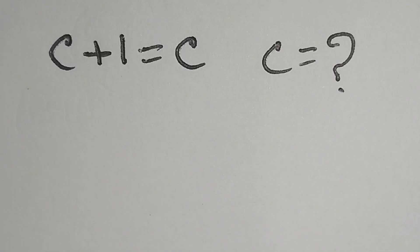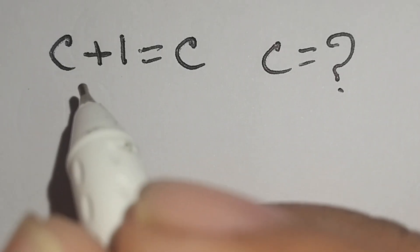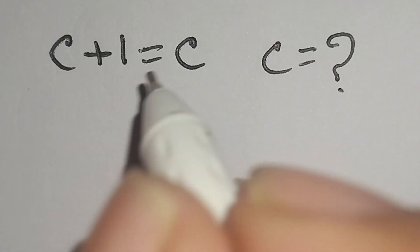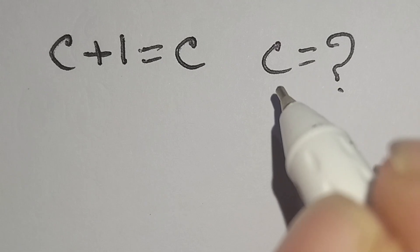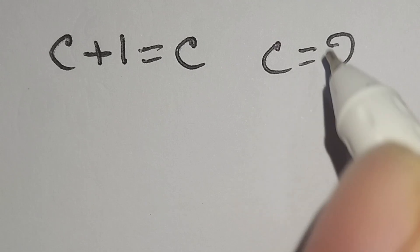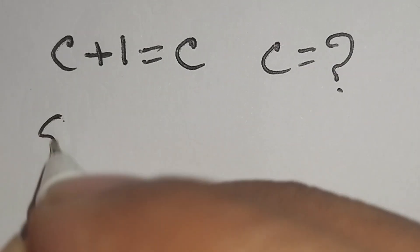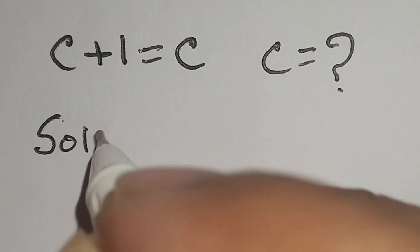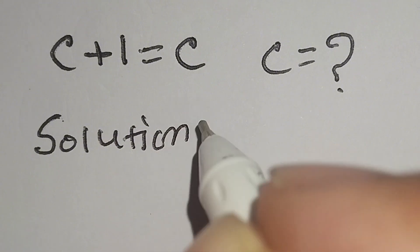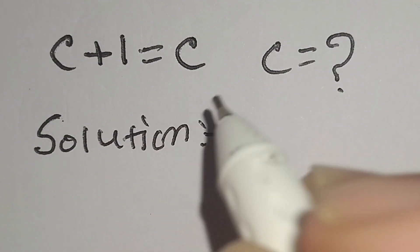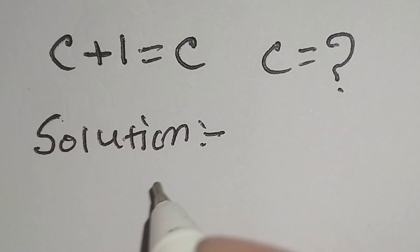Hello everyone, this is a nice math problem: c plus one is equal to square root of c, and we have to find the value of c. So let's start the solution. Our equation is c plus one is equal to square root of c.